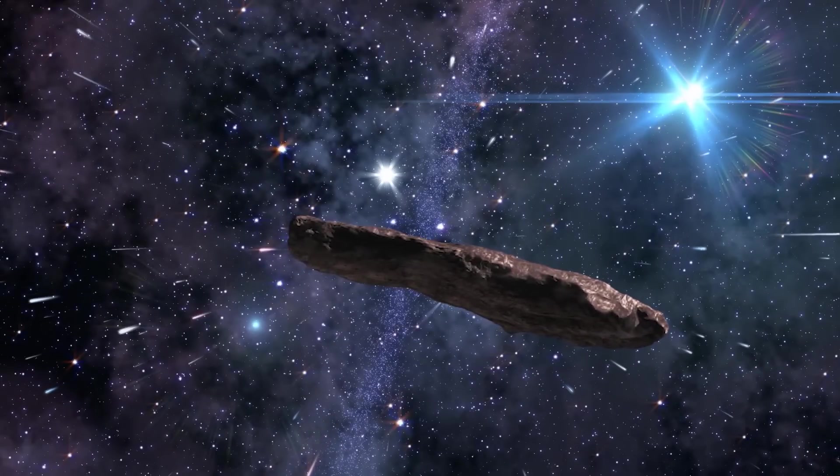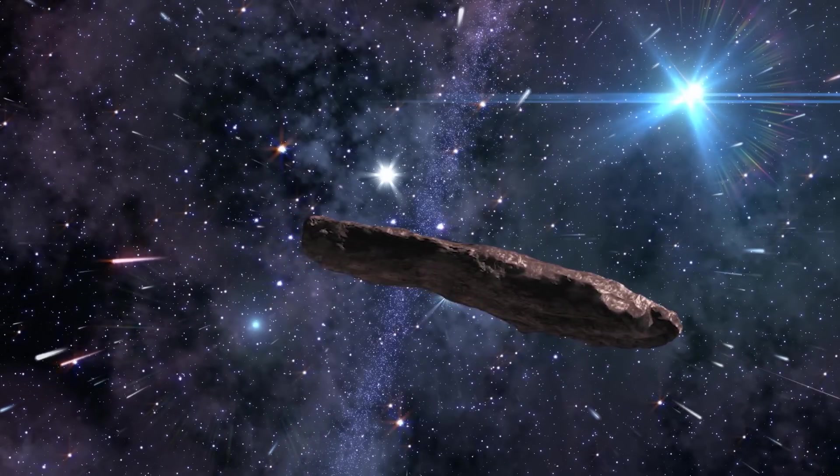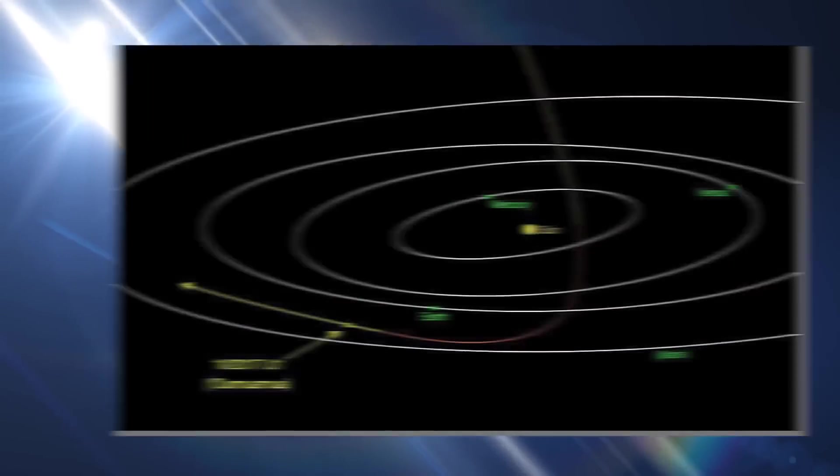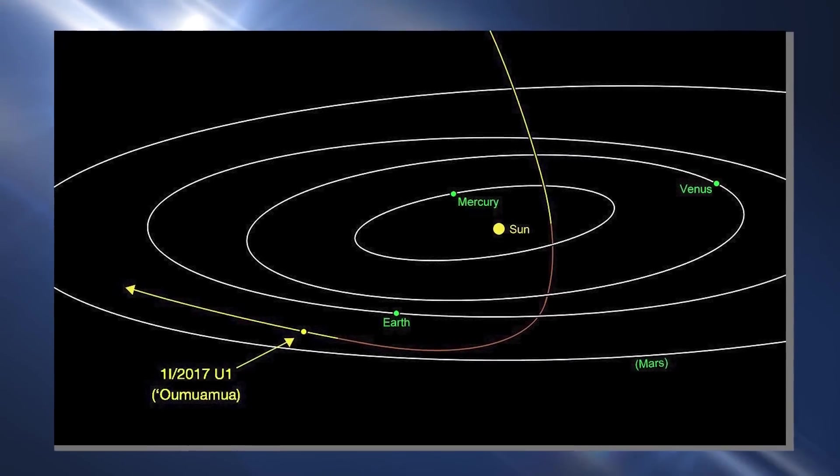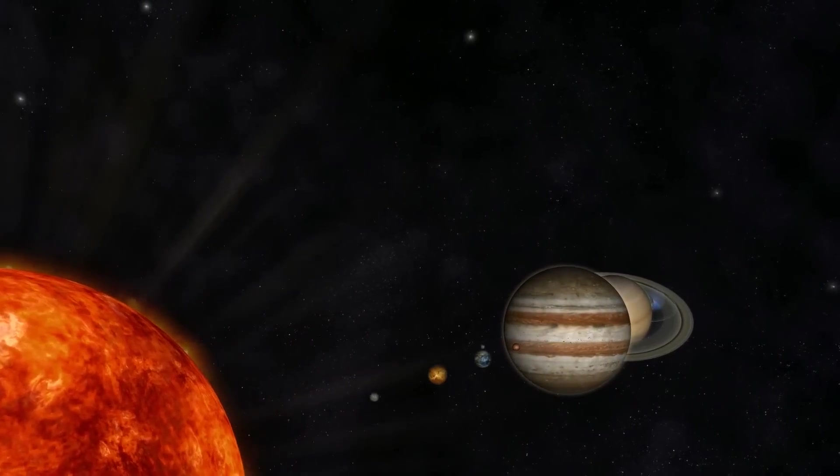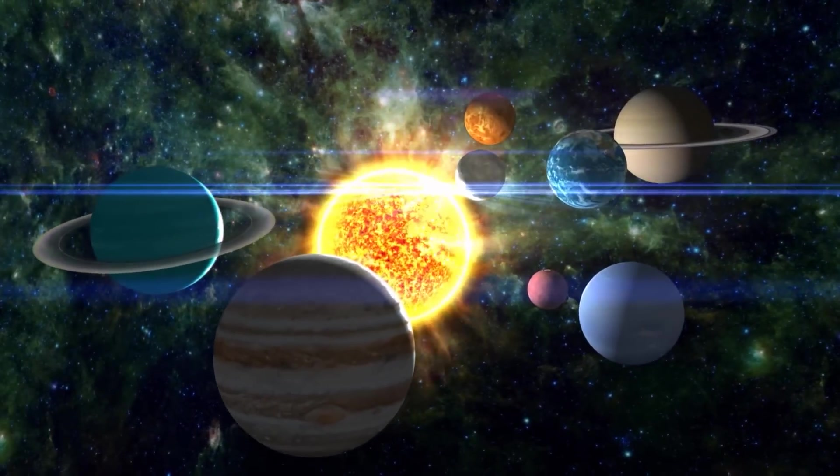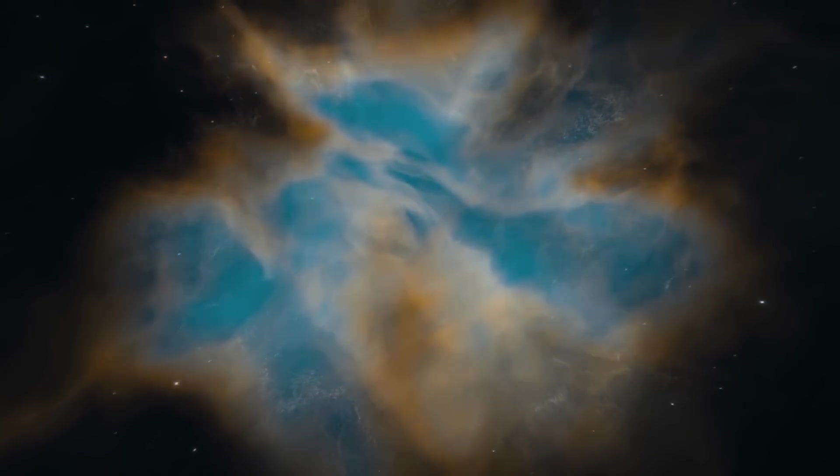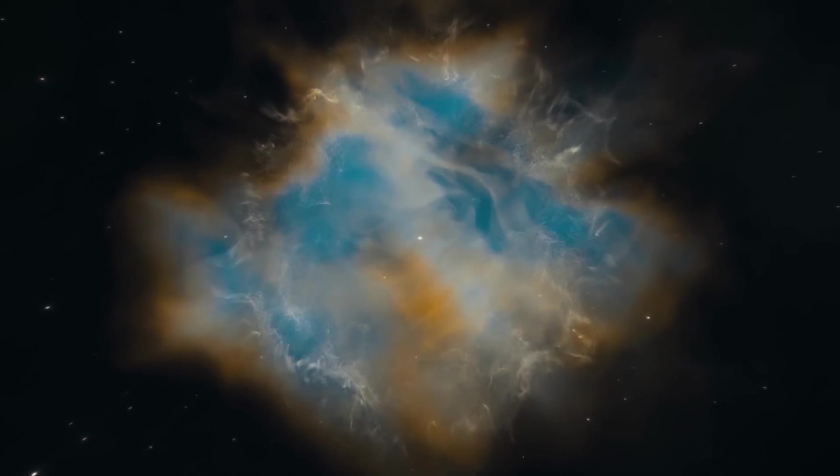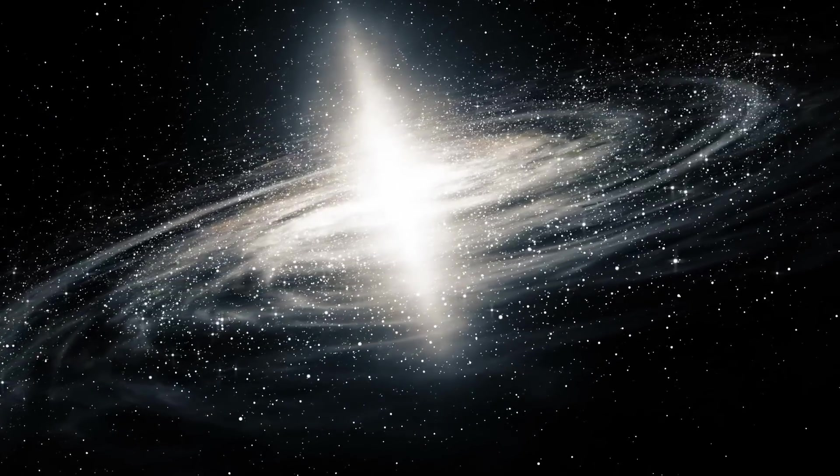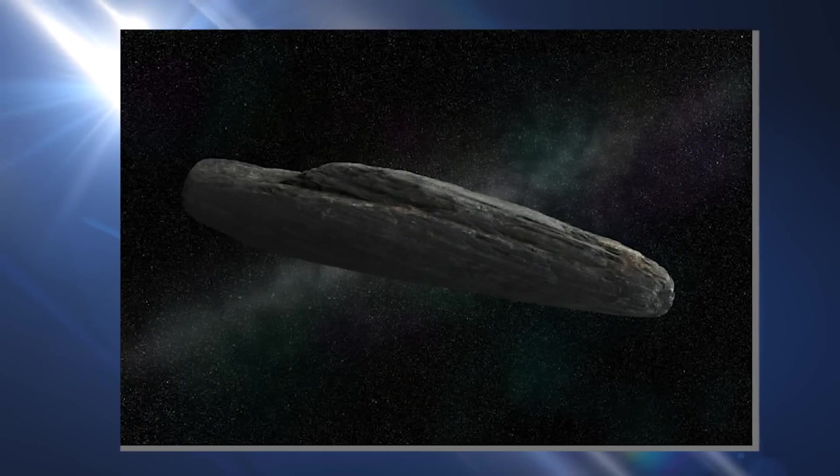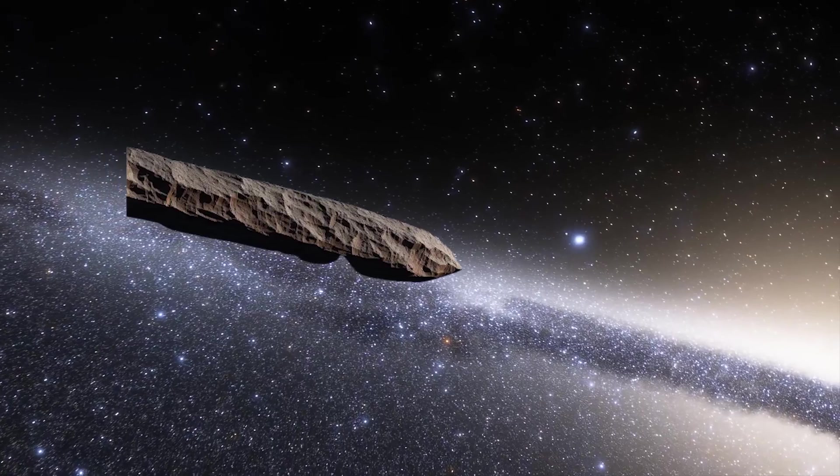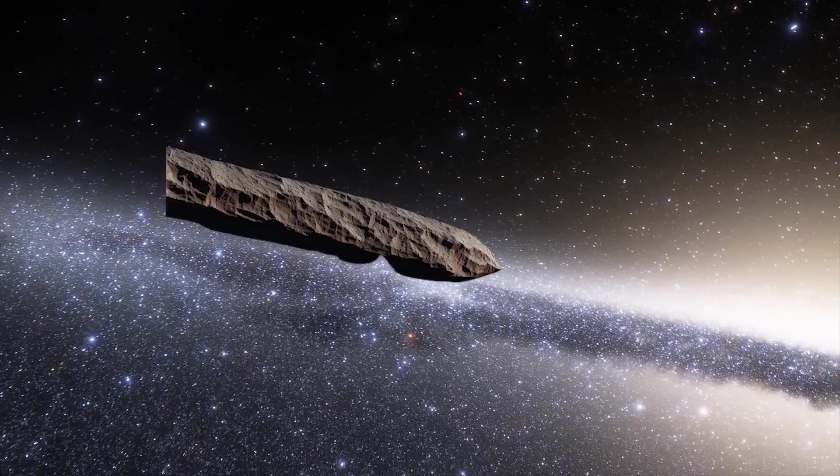The leading explanation for this non-gravitational acceleration was related to outgassing. Here, it is said that Oumuamua approached the Sun. Its surface would have been heated by solar radiation. This heating could cause ice and volatile compounds on its surface to vaporize and turn into gas, which would then be expelled from the object. As gas was ejected in one direction, it acted as a tiny rocket engine, providing a slight thrust in the opposite direction. This thrust resulted in a slight acceleration of Oumuamua, causing the observed deviation from the purely gravitational trajectory.